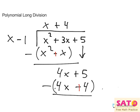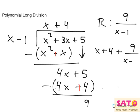Distribute, and our remainder is 9. How do we write a remainder? Well, the remainder is the number left over, over the divisor. So that would be our final answer, x plus 4, plus 9, divided by x minus 1.